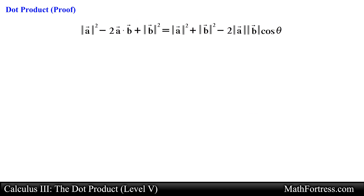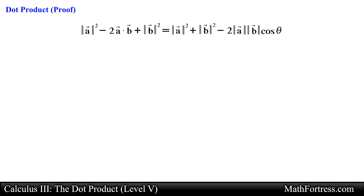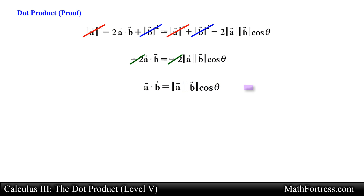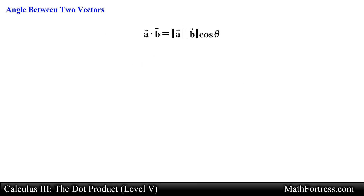Now we can replace the left hand side of our original law of cosines expression with this new expression. Notice that the magnitude of vector A squared and the magnitude of vector B squared both cancel out. The constant negative 2 also disappears and we are now left with the geometric definition of the dot product. This ends the proof. This expression is very useful in finding the dot product but it can also be used to find the angle between two vectors.